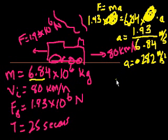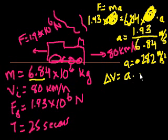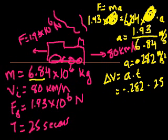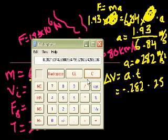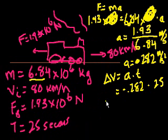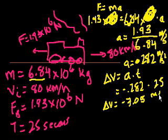How fast will the train be going after 25 seconds? The change in velocity equals acceleration times time. Taking the train's velocity as positive, the acceleration is negative since it opposes the motion. So the change in velocity is minus 0.282 meters per second squared times 25 seconds. Calculating: 0.282 times 25 equals 7.05. So the change in velocity is minus 7.05 meters per second.